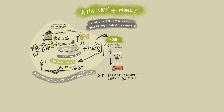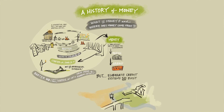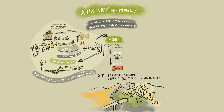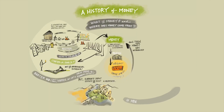We also find that elaborate credit systems were established long before coinage was invented — in the Indus Valley, in Mesopotamia, and in ancient China. That really changes the story about banking, credit, and money. Rather than money coming first and then banking and credit, it turns out credit came first and then money was introduced.